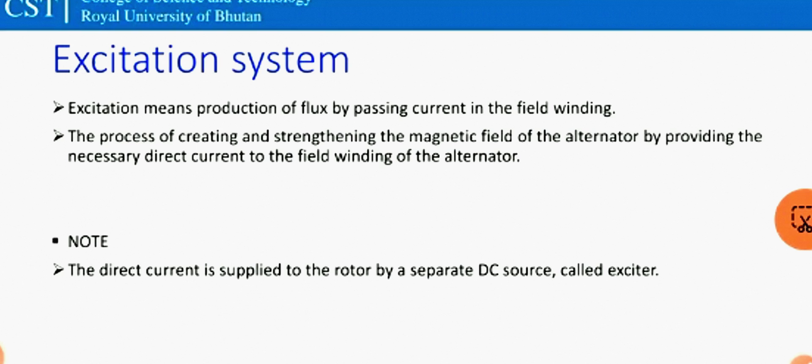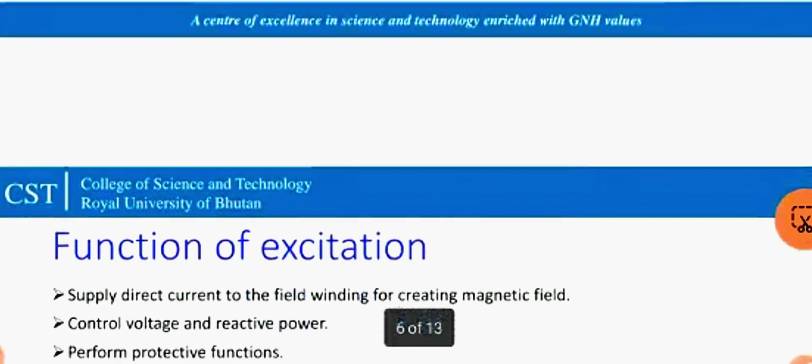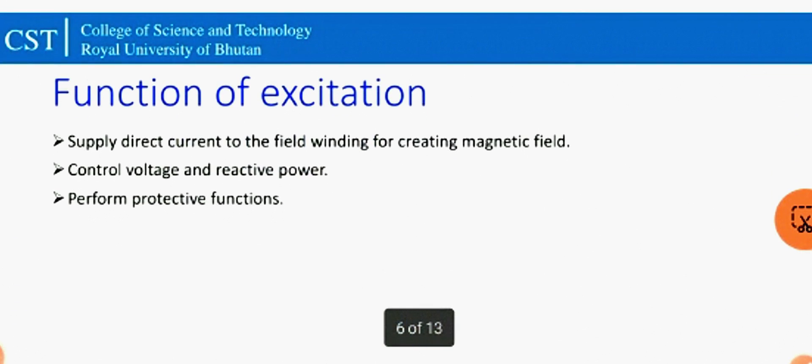An important note to keep in mind is that the direct current is supplied to the rotor by a separate DC source called exciter. The functions of the excitation system are: number one, to supply direct current to the field winding for creating magnetic field; number two, to control voltage and reactive power; number three, to perform protective functions.